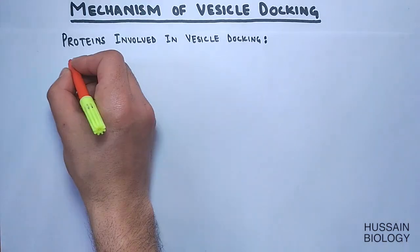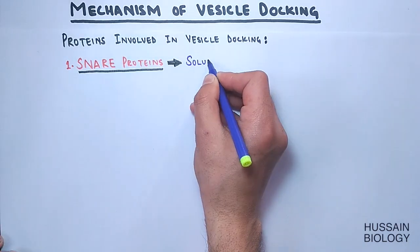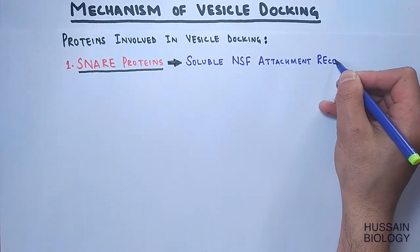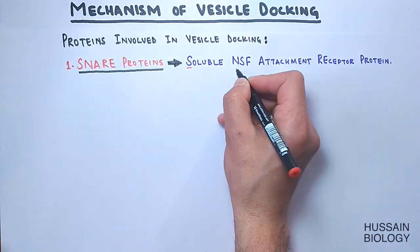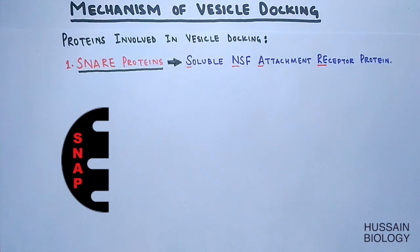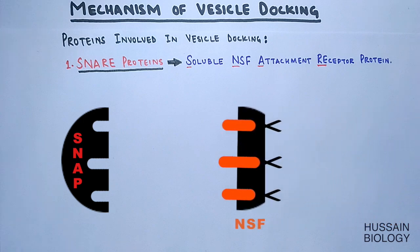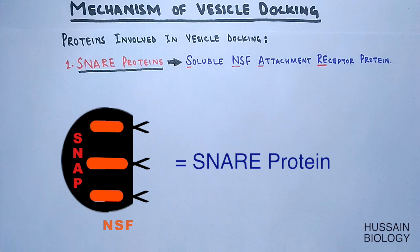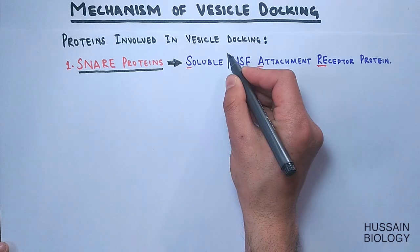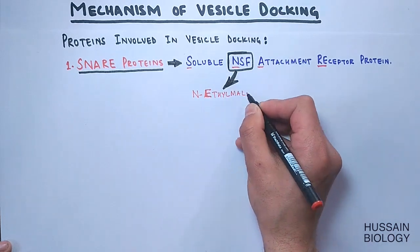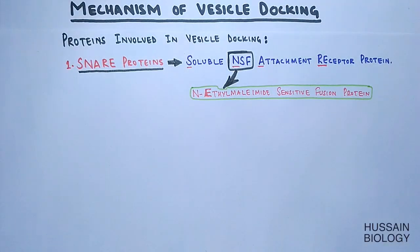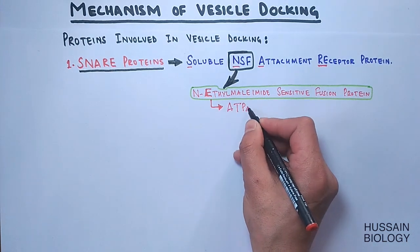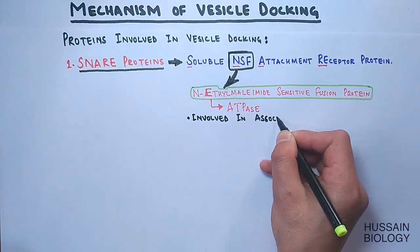The first important protein is the SNARE protein — an acronym for Soluble NSF Attachment Receptor protein. SNARE has two entities: the soluble NSF receptor protein (SNAP) and the NSF protein, which attaches to the SNAP receptor protein to form the fully functional SNARE protein. NSF stands for N-ethylmaleimide Sensitive Fusion protein, and it is an ATPase involved in the association and dissociation of SNARE proteins.